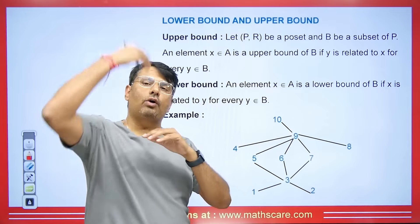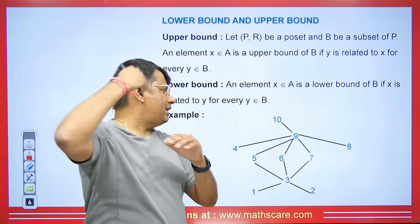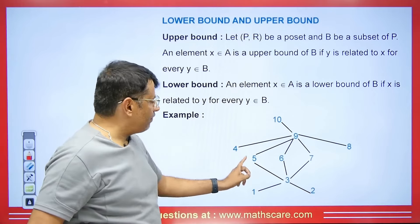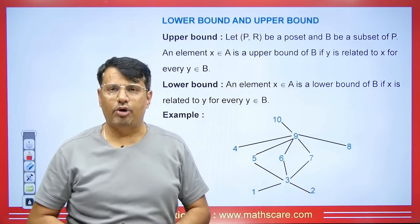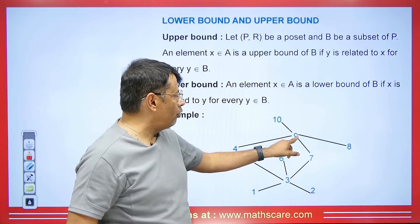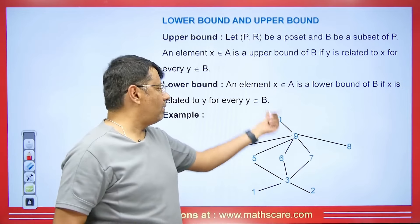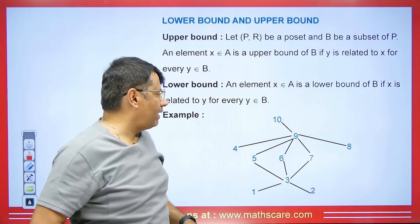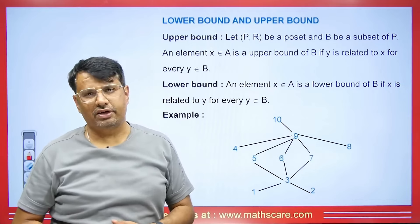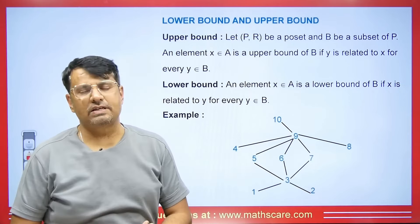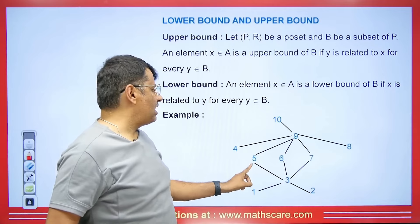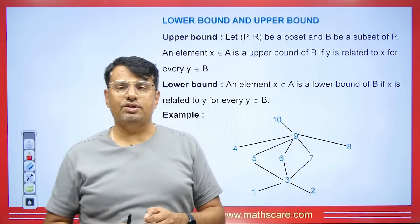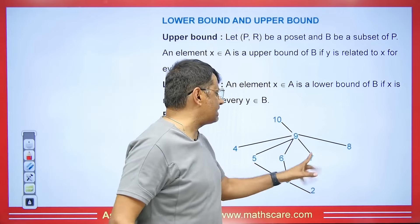For example, if asked what is the upper bound of element 9 in a set, we look for which element is higher than 9 and related to it — obviously it's 10. So 10 will be its upper bound. If asked the upper bound of 5, 6, 7 — we can have 9 or even 10 as upper bounds. 4 and 8 are below, since the relation is always upwards, so they are not upper bounds.